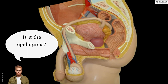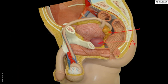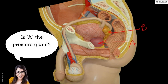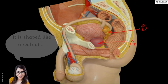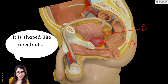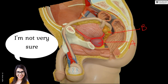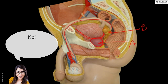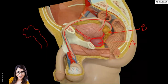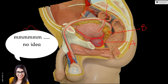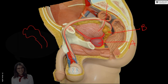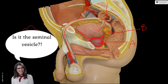That structure is the epididymis. Identify structure A and B: A is the prostate gland — it is below the bladder and the subject is male. B is located behind the urinary bladder; it is not the vas deferens or the ureter. It is the seminal vesicle.